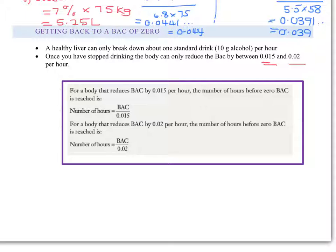For a body that reduces BAC by 0.015 per hour, the number of hours before zero BAC is reached is given by this formula: Number of hours equals BAC over how fast your body reduces this. This is only a best estimate - I would never rely on this to accurately tell me how sober I was. I'd make sure not to drink at all. For a body that reduces BAC by 0.02 per hour, the formula changes slightly. Let's see how we can use this.